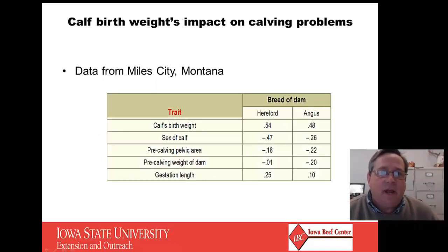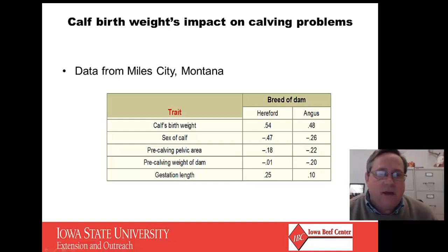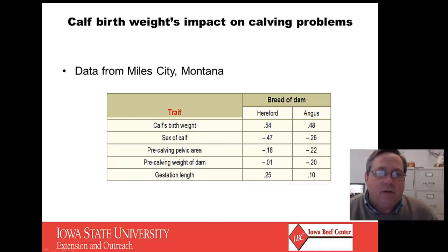There are a lot of different things that affect calving difficulty, but calf birth weight is one of the biggest. Looking at both Herefords and Angus in this definitive historic study at Miles City, birth weight was a big part of the effect on calving difficulty. Sex of the calf as it relates to calf size, pelvic measurement, and gestation length also probably relate to size of that calf. Birth weight is one of the biggest contributors to calving difficulty.